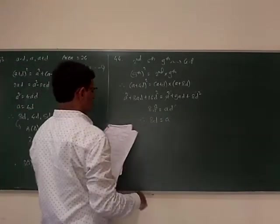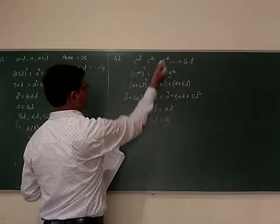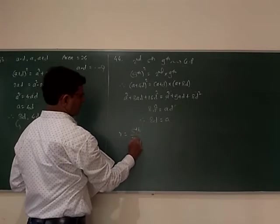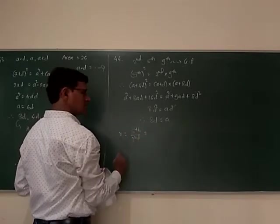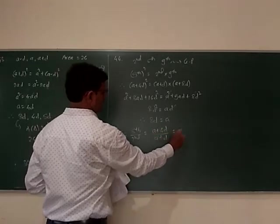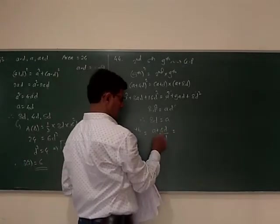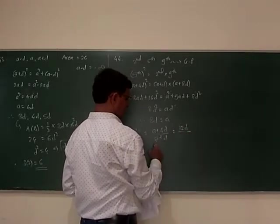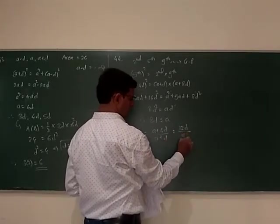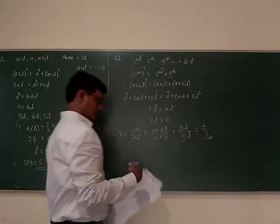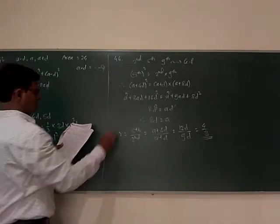The common ratio of the geometric progression: the 5th term upon 2nd term is A plus 4D upon A plus D. Since A equals 8D, this becomes 8D plus 4D upon 8D plus D, which is 12D upon 9D equals 4 by 3. Option B.